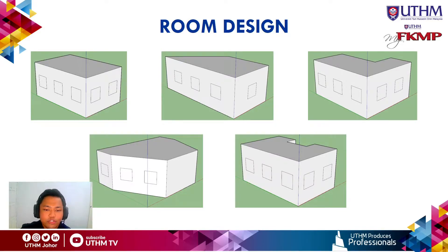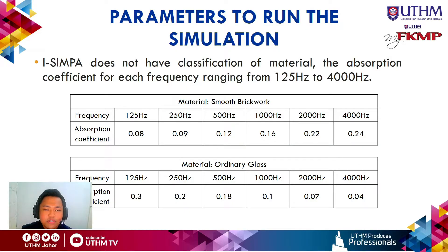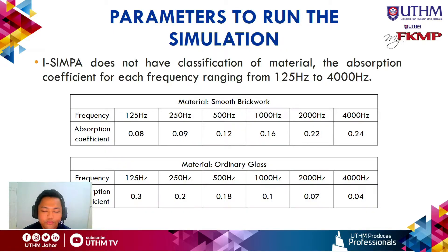These are the parameters used to run the simulation. Since i-Simpa does not have a built-in material classification, I needed to use the absorption coefficient for each material across frequencies ranging from 125 Hz to 4000 Hz. Smooth brickwork was used for the wall panels, floor, and ceiling, while ordinary glass was used for the windows.